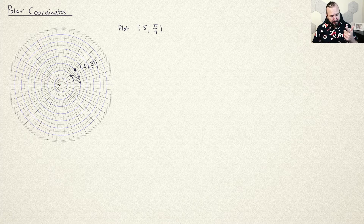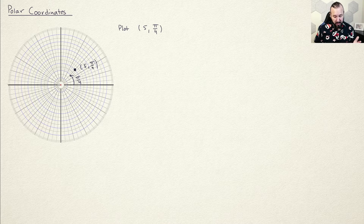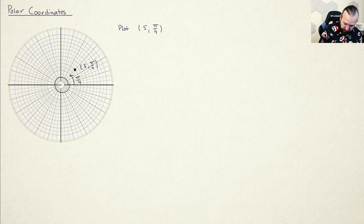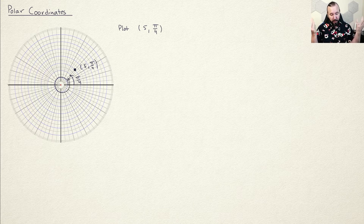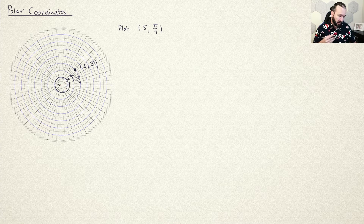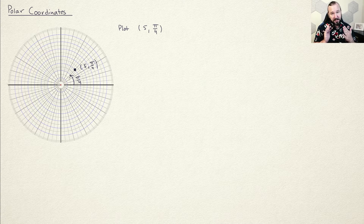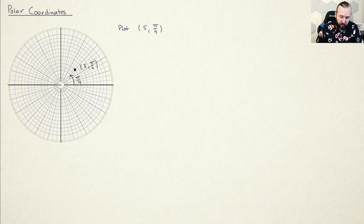One thing you'll notice immediately is that unlike rectangular coordinates, polar coordinates are not unique. One thing I could do is go around another full revolution and then pi over 4 — so pi over 4 plus 2 pi — and that would give me the same location. Polar coordinates are not unique; the same location can be described in more than one way.